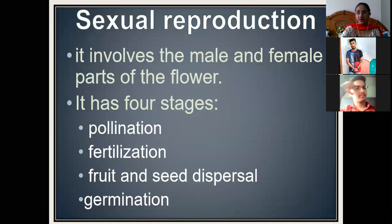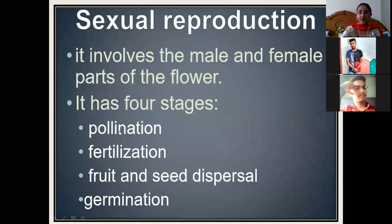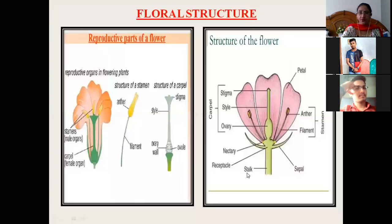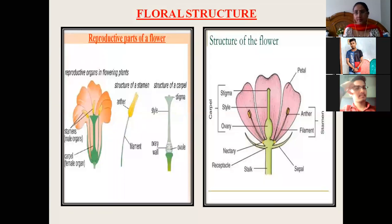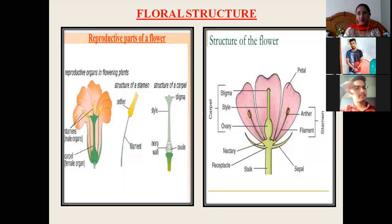Sexual reproduction involves the male and female parts of the flower. There are four stages of sexual reproduction: first is pollination, second is fertilization, third is fruit and seed dispersal, and the last one is germination. We will now study the floral structure of a plant, because the flower is the main reproductive part of a plant.